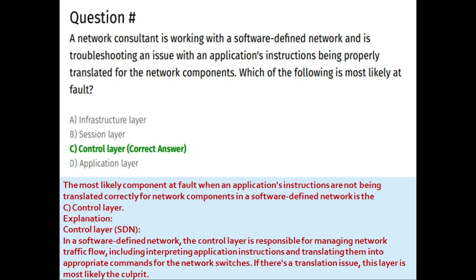When an application's instructions are not being translated correctly for network components in a software-defined network, the most likely component at fault is the control layer. In an SDN, the control layer is responsible for managing network traffic flow, including interpreting application instructions and translating them into appropriate commands for the network switches. If there is a translation issue, this layer is most likely the culprit. The correct answer is C: control layer.